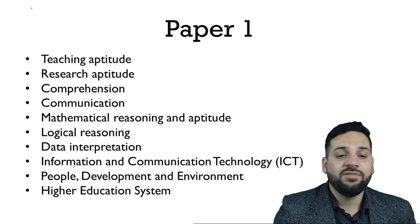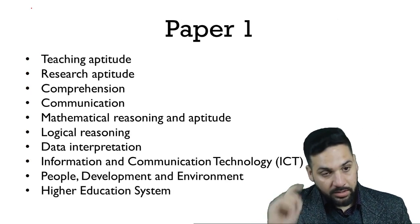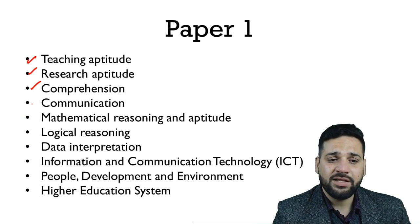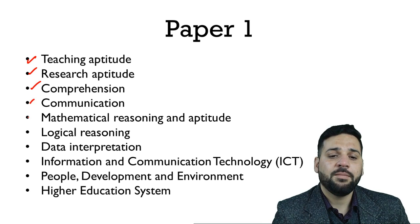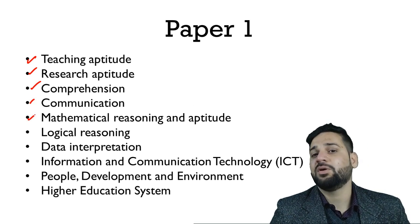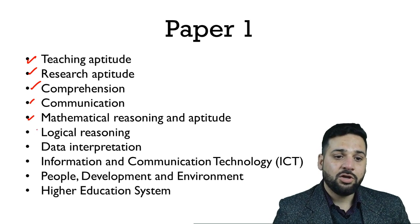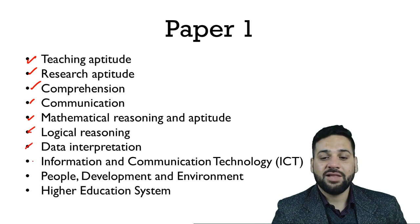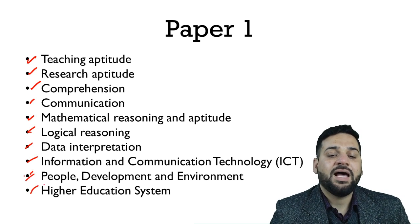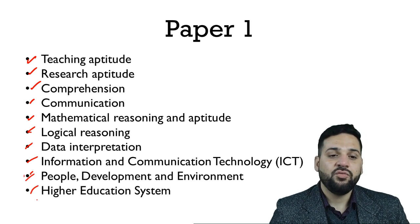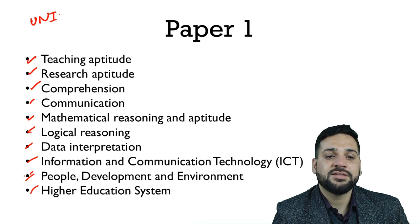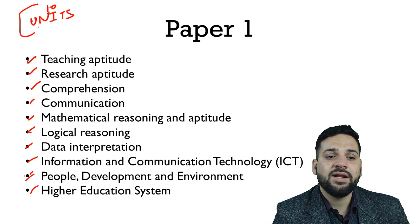For Paper 1, we are going to cover: teaching aptitude, research aptitude, reading comprehension, communications, mathematical reasoning and aptitude, logical reasoning, data interpretation, ICT, people, development and environment, and the higher education system. There are 10 units and we are going to cover each of them.